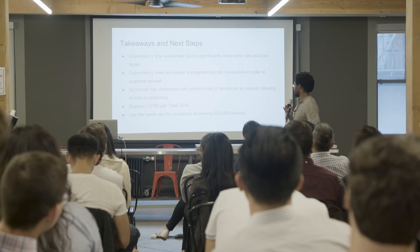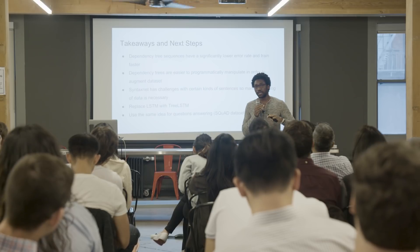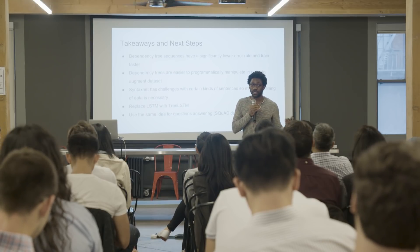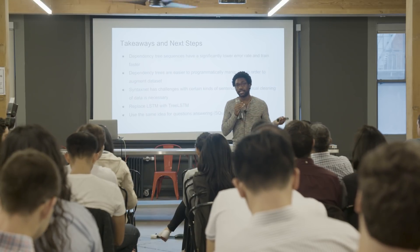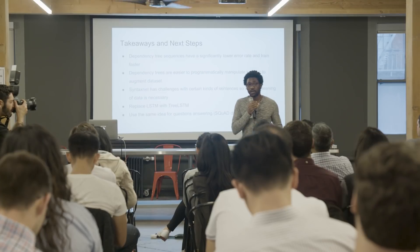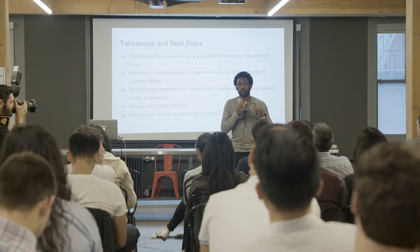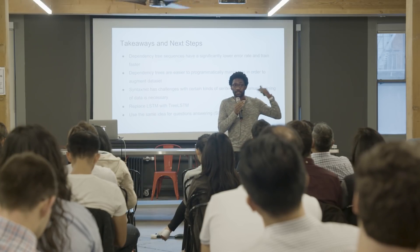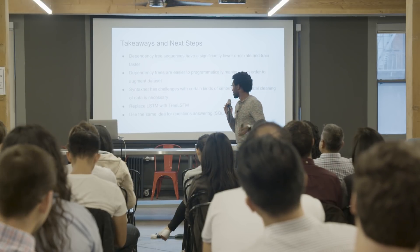The next step is to use tree LSTMs instead of standard LSTM cells — an LSTM specifically designed for trees that works on tree structures rather than sequences. I'm also going to try applying this same idea to question answering using the SQuAD dataset. I've also noticed that dependency trees are easy to manipulate: you could augment the data by changing the order of children in the trees to produce a new set of trees, piling them onto your dataset for more data. It works in most cases, though not all.